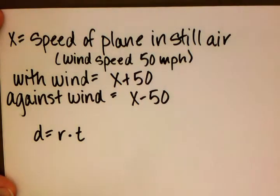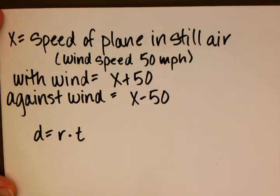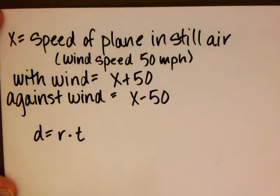The question asks us to find the speed of the plane in still air, so that is what we'll establish as our variable. Remember that the wind speed is 50 miles per hour, so if we take the speed of the plane in still air and add 50 miles per hour, we get the speed of the plane with the wind. If we subtract 50, we get the speed of the plane against the wind.